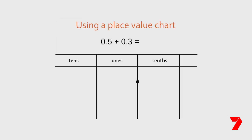Using a place value chart, let's have a look at the following expression: five tenths add three tenths. Here we have five tenths in the tenths place. Add another three tenths and we are provided with eight tenths altogether. Our answer: five tenths plus three tenths equals eight tenths.